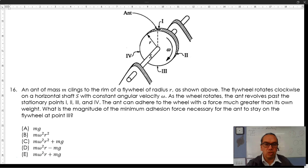The ant can adhere to the wheel with a force much greater than its own weight. What is the magnitude of the minimum adhesion force necessary for the ant to stay on the flywheel at point 3?